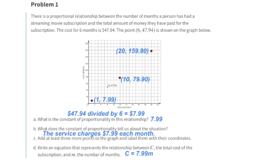Part B: What does the constant of proportionality tell us about this situation? It tells us that the service charges $7.99 each month.